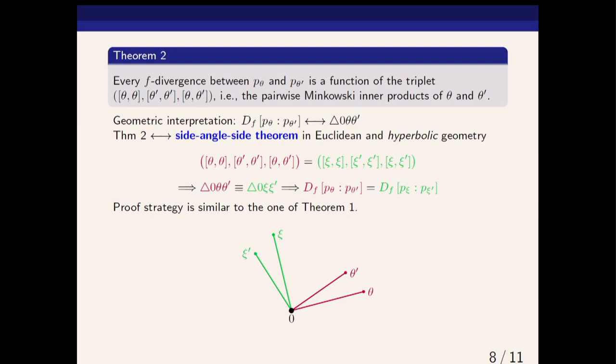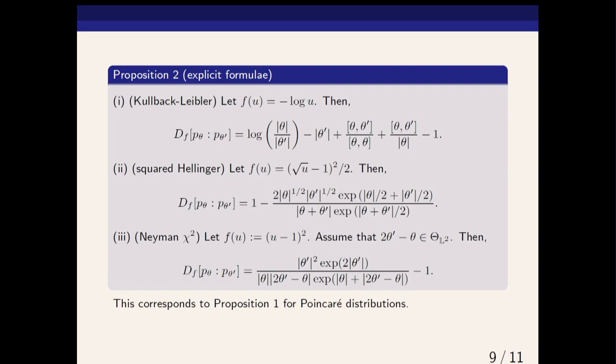To get explicit formulas for f-divergences between two hyperbolic distributions, we will get them for the Kullback-Leibler, squared Hellinger, and chi-square as before. We will see that we can express them as claimed by the three canonical terms.